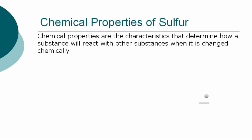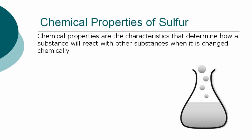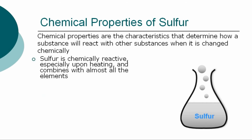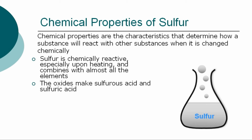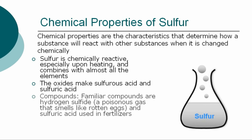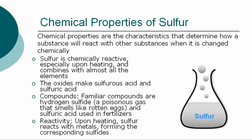The chemical properties are the characteristics that determine how sulfur will react with other substances when it is changed chemically. Sulfur is chemically reactive, especially upon heating, and combines with almost all the elements. Its oxides make sulfurous acid and sulfuric acid. Familiar compounds are hydrogen sulfide, a poisonous gas that smells like rotten eggs, and sulfuric acid, which is used in fertilizers. Upon heating, sulfur reacts with metals, forming the corresponding sulfides.